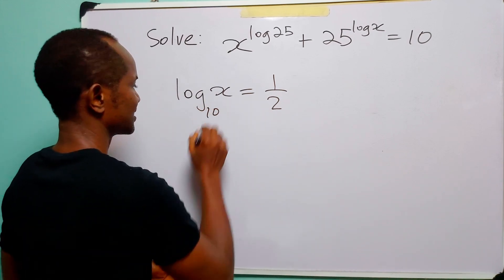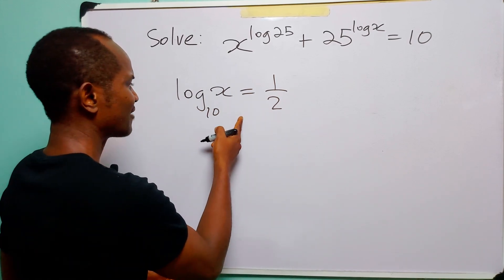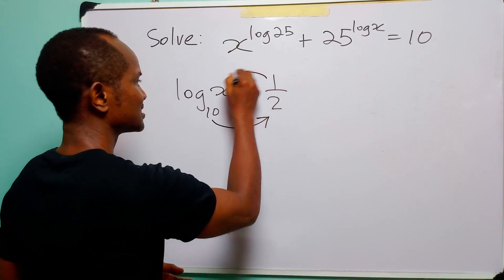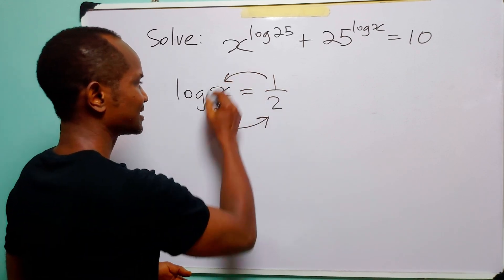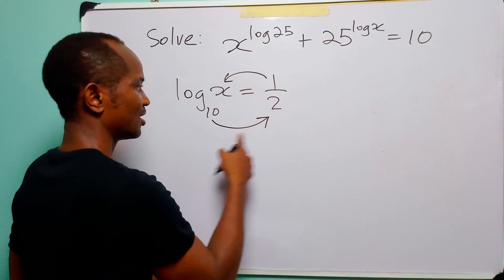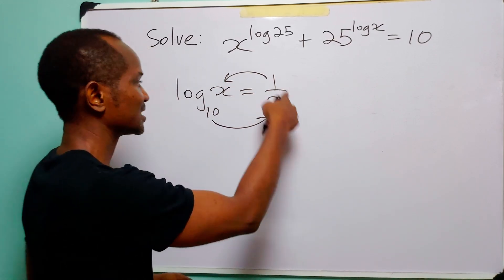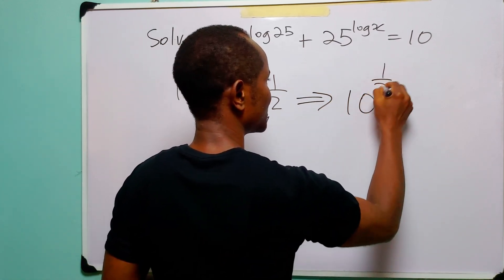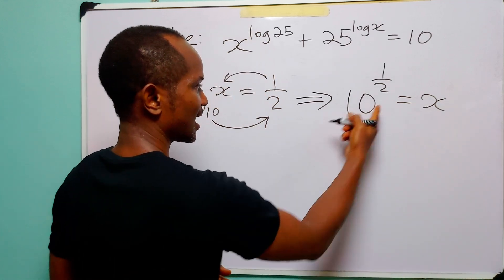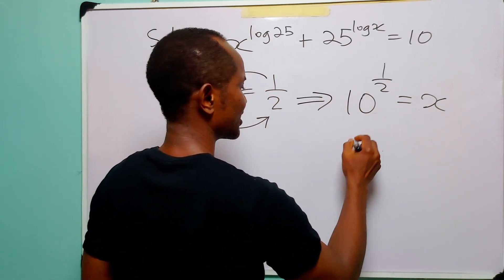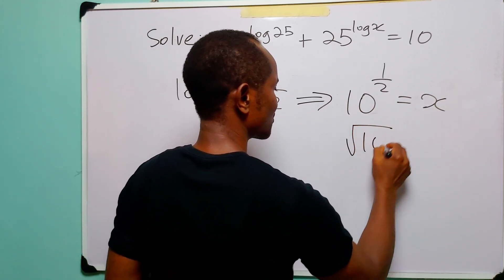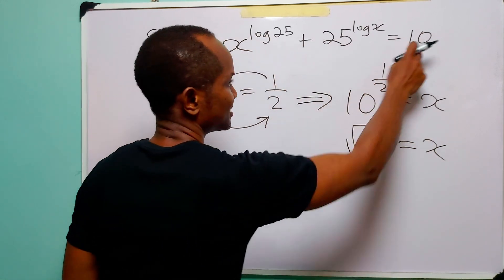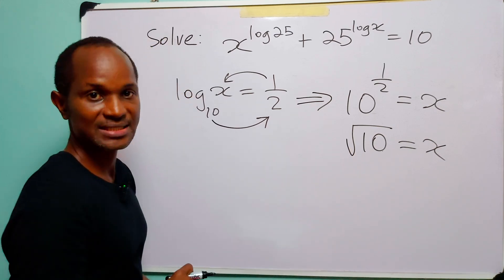You know that the base is 10 here. When we have a statement like log x equals one half, it simply means that 10 to the power half is equal to x — note the anti-clockwise movement. And of course, 10 raised to the power half, written in radical form, is simply the square root of 10. So the value of x that satisfies this logarithmic equation is root 10.